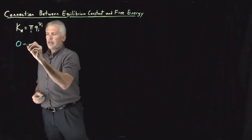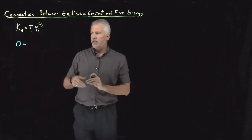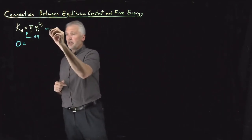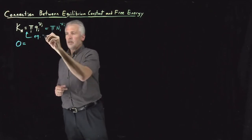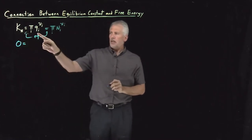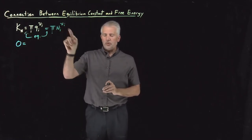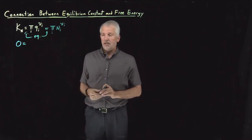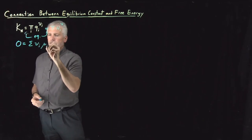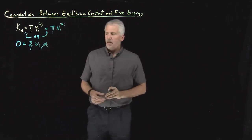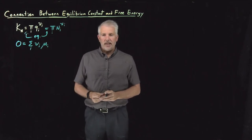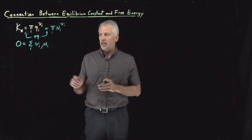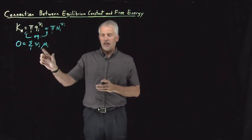The other approach is to take a step back. The equilibrium condition is that the product of molecules raised to their stoichiometric coefficients equals the equilibrium constant. Another equilibrium condition we've seen is that when a system is in equilibrium, the sum of the stoichiometric coefficients times the chemical potentials must add up to zero. When the reaction proceeds forwards or backwards, it doesn't end up changing the net chemical potential of the system.